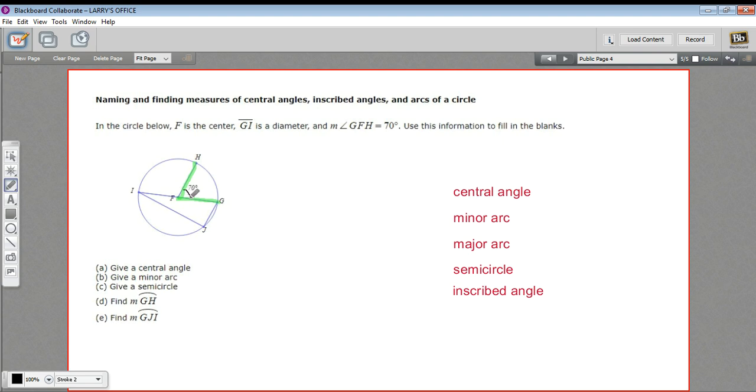And the thing about a central angle is whatever degree that angle is, it cuts off that many degrees of the arc. So this is 70 degrees of the way around a circle.